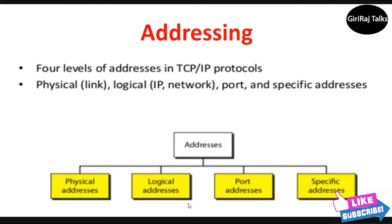Addressing. In this, there are four levels of addresses used in an internet employing the TCP/IP protocols. Addresses are broadly divided into four types: first, physical addresses; second, logical addresses; third, port addresses; and fourth, specific addresses.